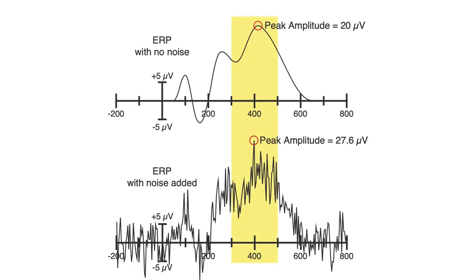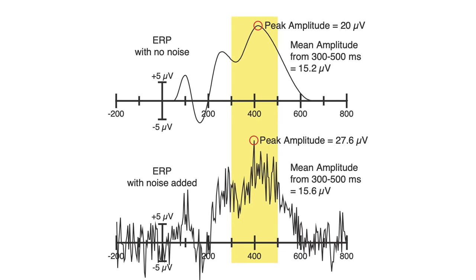For example, here we're looking at identical waveforms, except the bottom one has noise added to it. See how the peak of the noisy waveform is 27.6 microvolts, whereas the peak of the clean waveform is 20 microvolts? So it's not valid to compare peak amplitudes in two groups or conditions where the noise level differs. This can occur when you're comparing a patient group to a control group, or when one condition has more trials than the other. However, mean amplitude isn't biased by the noise level — noise is equally likely to make the mean amplitude larger or smaller. So peak amplitude gets consistently larger as the waveforms get noisier, but mean amplitude doesn't.